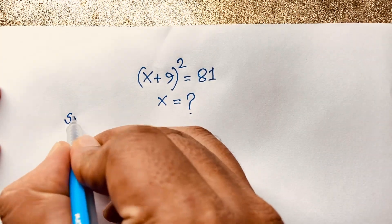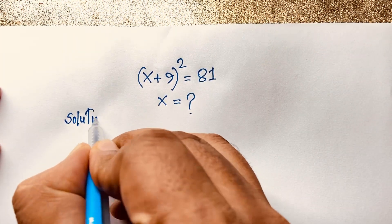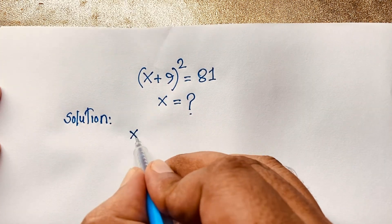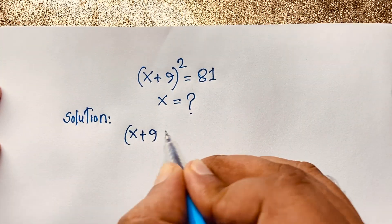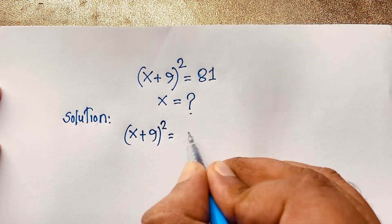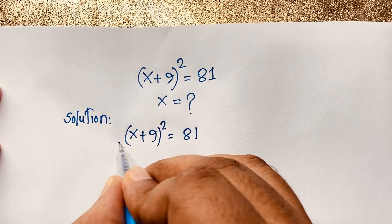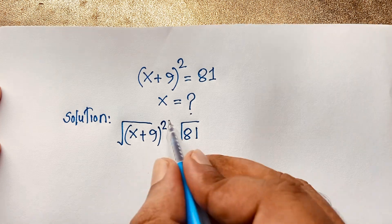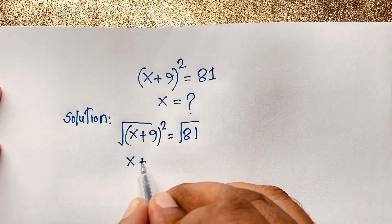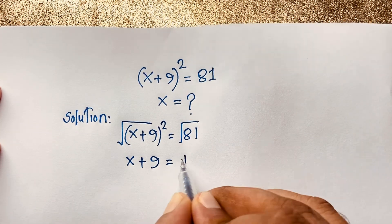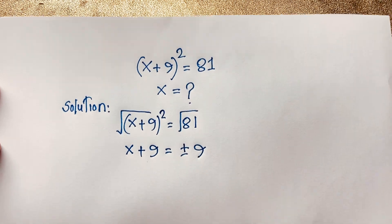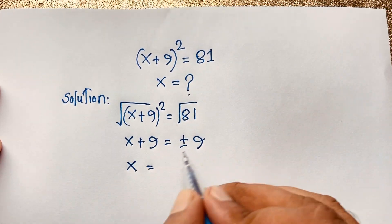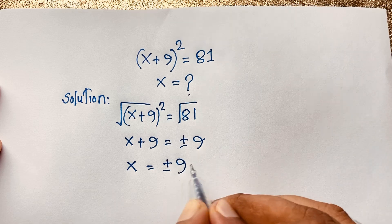So our math solution — I solve this question using various methods. Our question is (x + 9)² = 81. I apply a square root to both sides, then the square root is cancelled, and we find x + 9 = ±9. Now if I move the 9 to the other side, it will be negative 9.